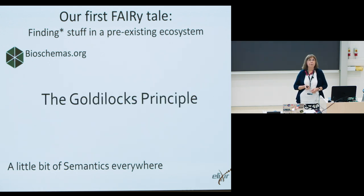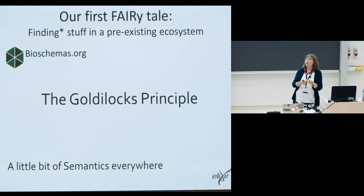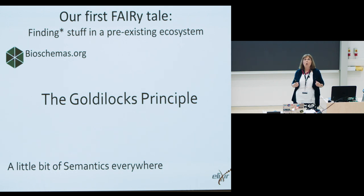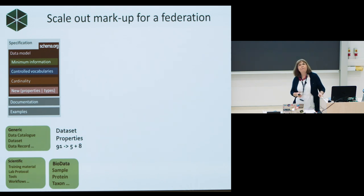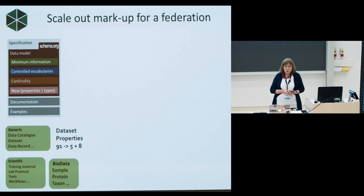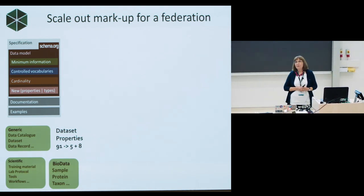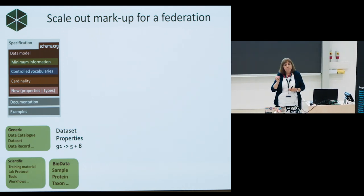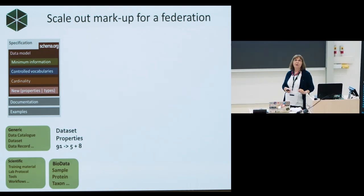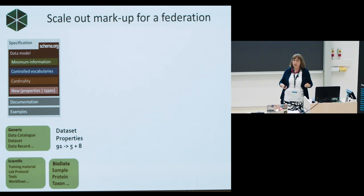It follows the Goldilocks principle — not too hot and not too cold, just enough. Goldilocks is a principle we're trying to follow throughout all of our Elixir FAIR commons activities. The temptation to over-engineer everything is strong, and we have to constantly hold back. So what we've managed to do over the last two or three years — it takes a long time — is take schema.org, consider 'dataset' for example. In schema.org, there are 91 properties for dataset. We probably don't need 91 properties. In fact, we needed five — we chose five with eight optional ones.